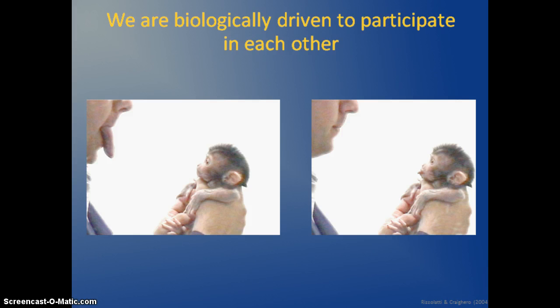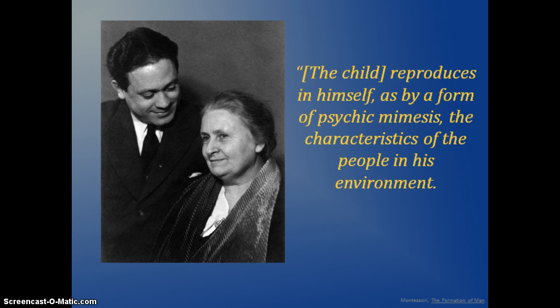We are literally biologically participating in each other when we perceive something happening. This has huge implications for violence on television — if you're witnessing a violent event, either live or recorded, your brain participates as if it were experiencing it. If you witness a heroic event, your brain participates as if it's in that event. These are mirror neurons activating — which is why role models are so important in Montessori education. Montessori said: 'The child reproduces in himself, as if by psychic mimesis, the characteristics of the people in his environment.'